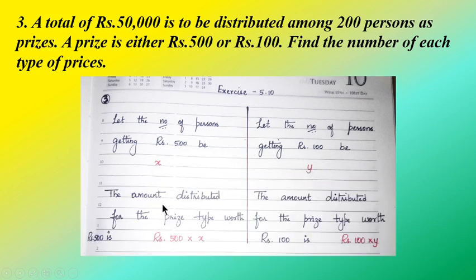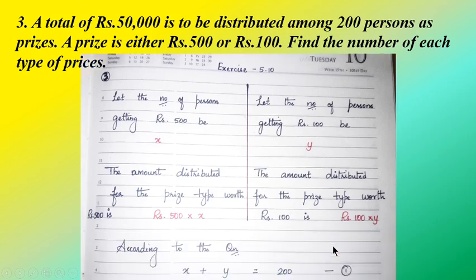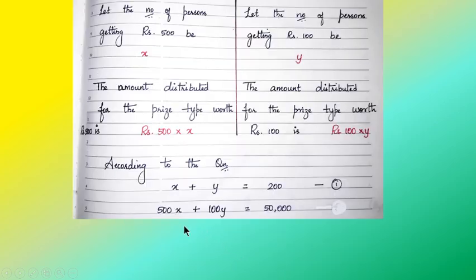The second category is according to the amount distribution. The amount distributed for the prize type worth rupees 500 is equal to 500 into x, and the amount distributed for the prize type worth rupees 100 is 100 into y. So according to the question, we write: x plus y equals 200 (equation 1, based on number of persons), and 500x plus 100y equals 50,000 (equation 2, based on amount distribution).